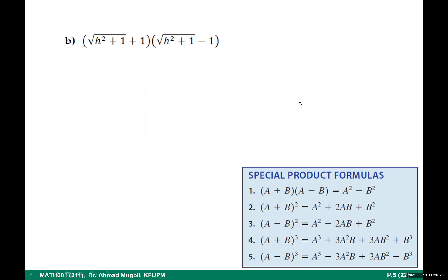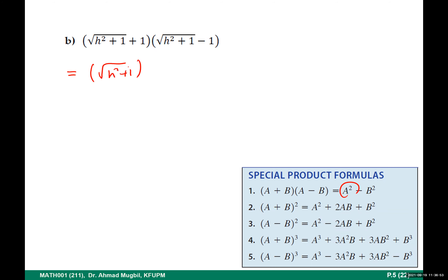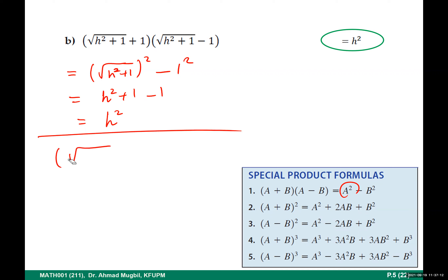For the next one — who can tell me which formula to use? This is (h² + 1)(h² − 1): we have a + b times a − b, the sum and difference of the same quantities. So the result is a² − b²: (h²)² − 1² = h⁴ − 1. The final answer is h⁴ − 1.